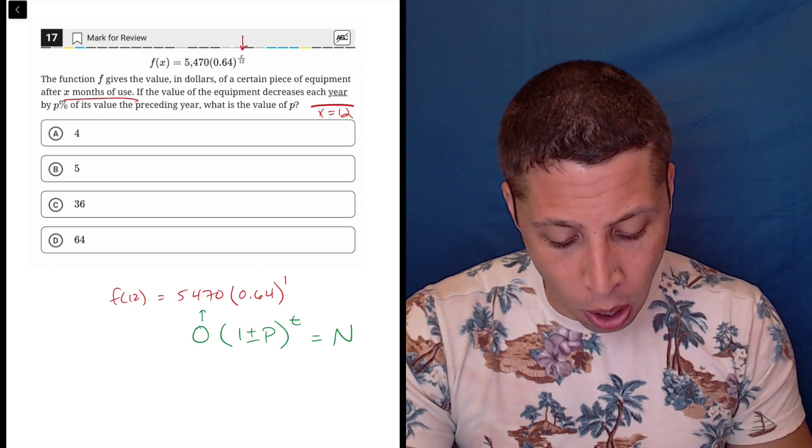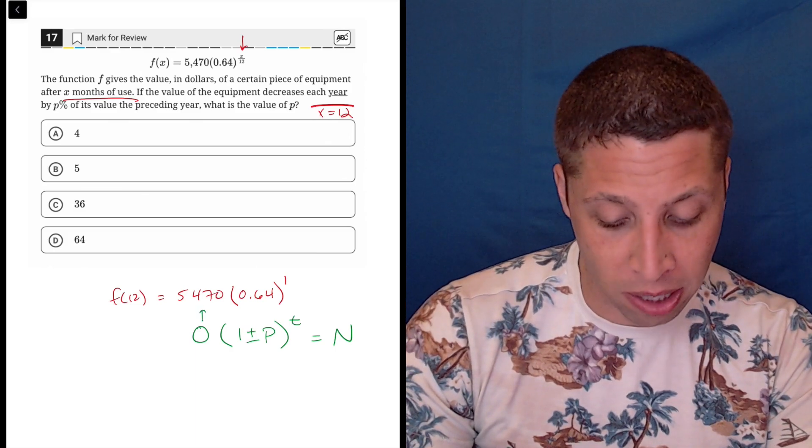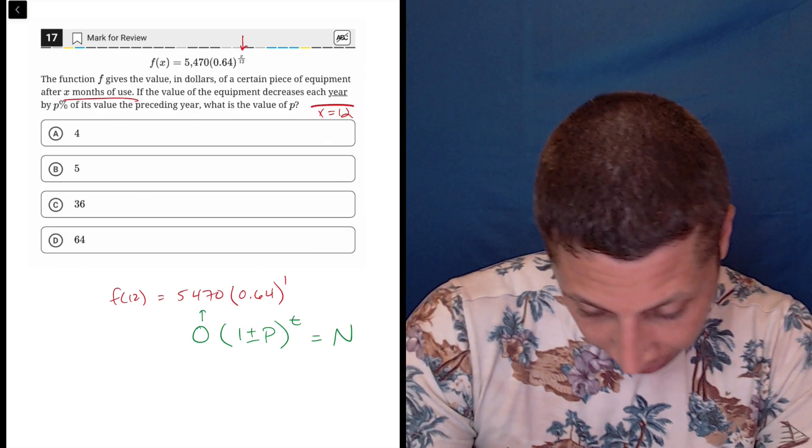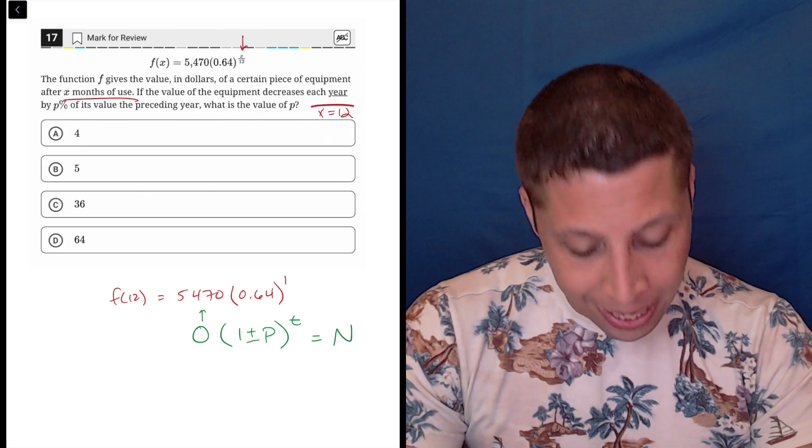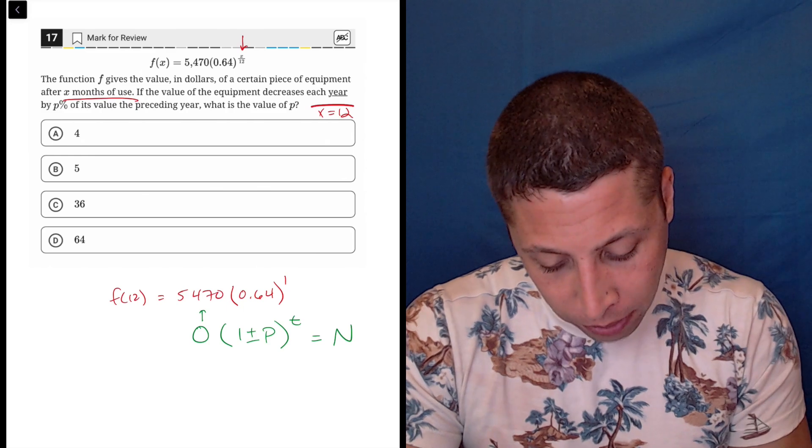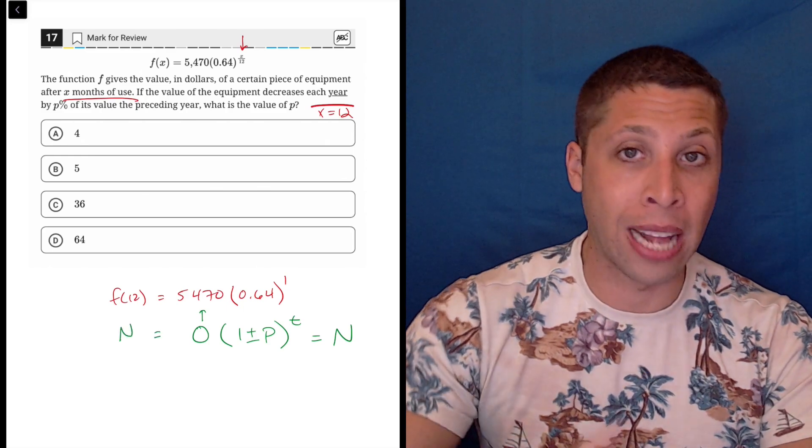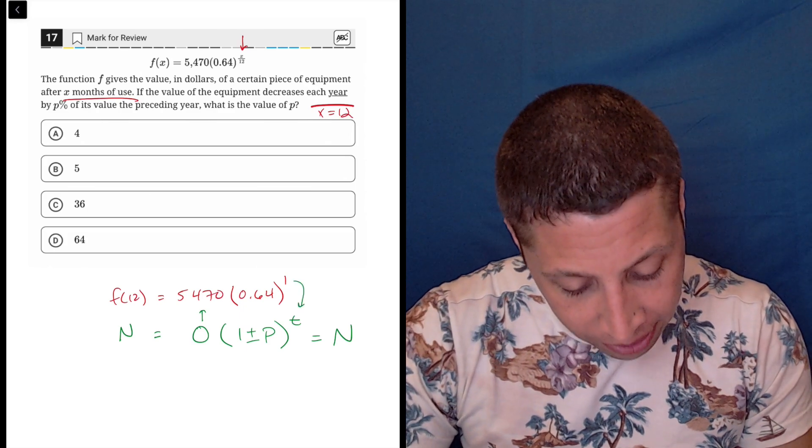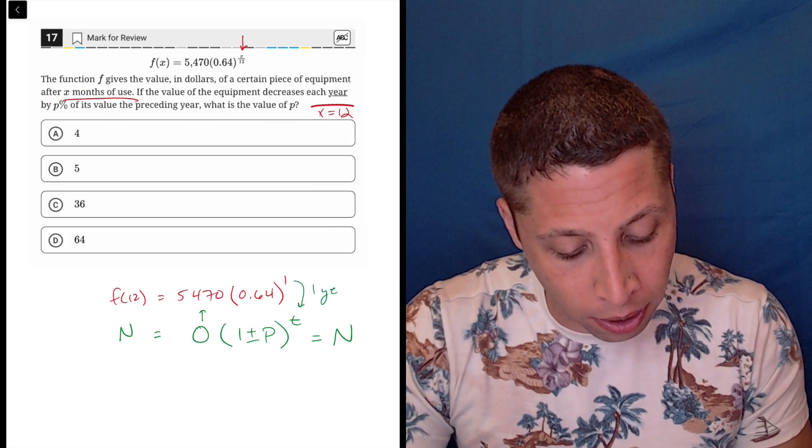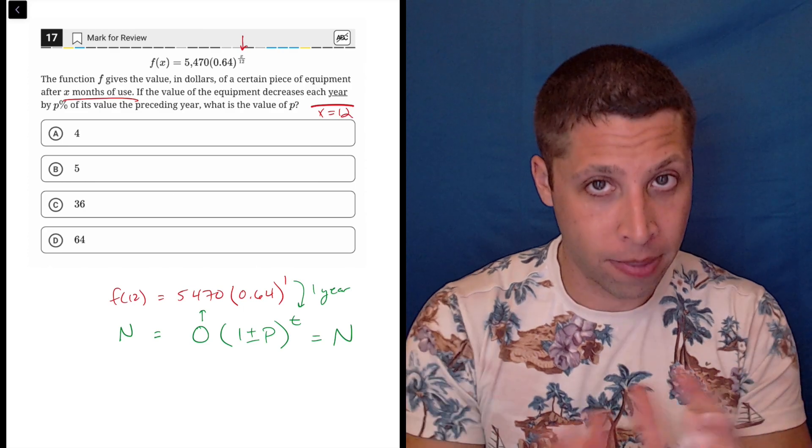So the O is the 5470. That's the original amount that this piece of equipment was worth. The N is the new amount. So that's going to be like my f(12) here. That's how much it's going to be worth after a certain amount of time has passed. And in this case, the time is one year or 12 months, same thing.